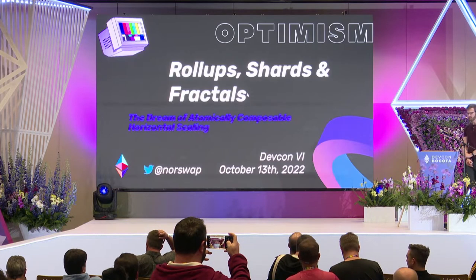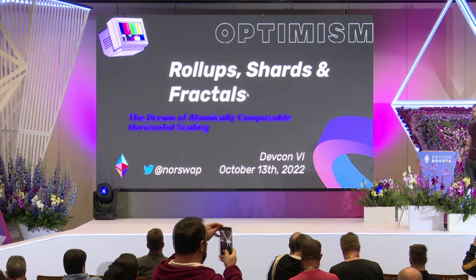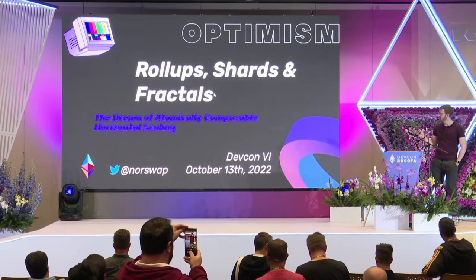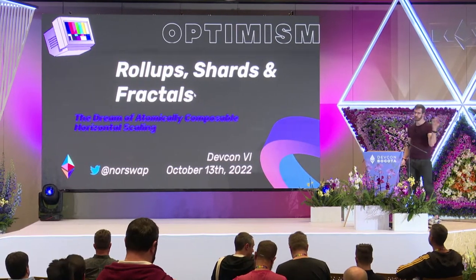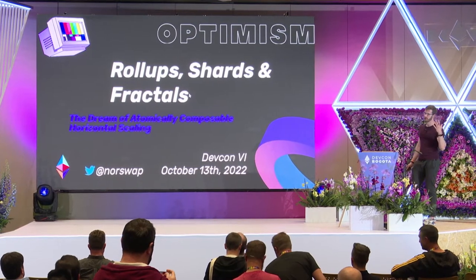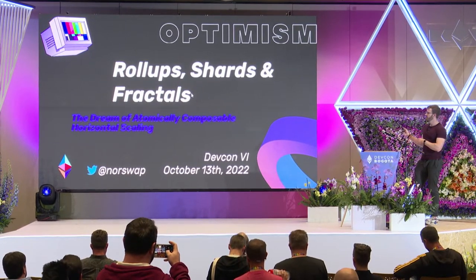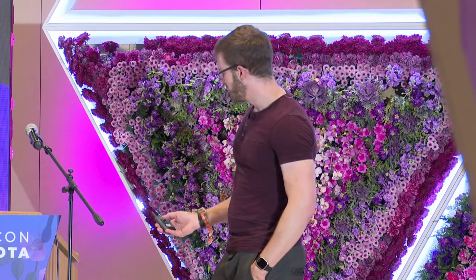The title is a doozy, it's very long, but what we're going to be talking about essentially is scaling. Basically there's two kinds of scaling: vertical scaling, which is when you have a huge machine, and horizontal scaling, when you spread the load between multiple machines.